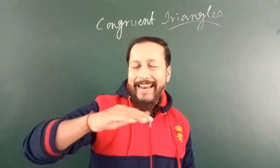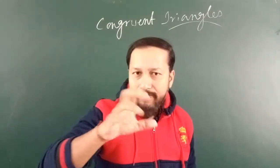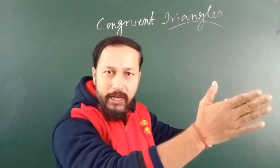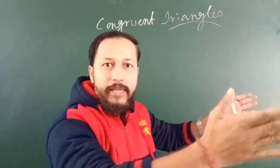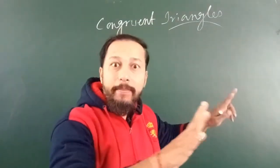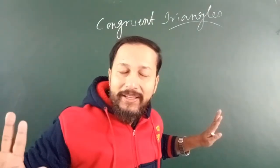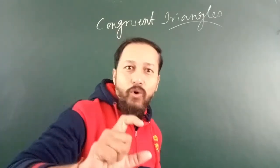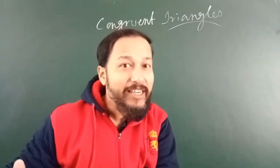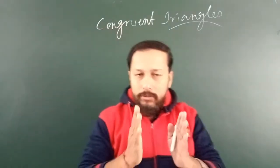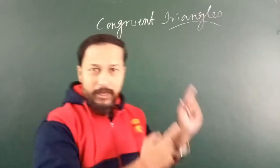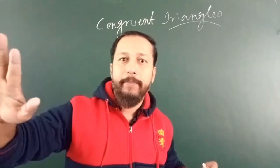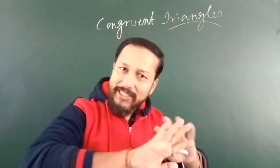Sometimes we say that two persons are same to same — that means they are congruent. That word indicates congruence. So if I tell you congruent triangles, that means two triangles same to same.